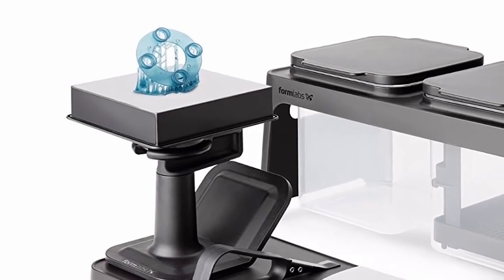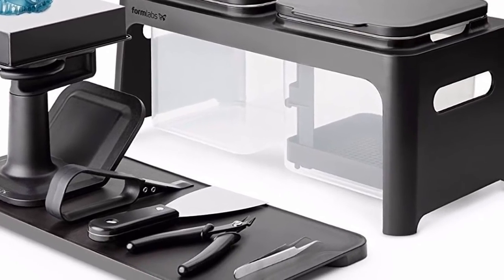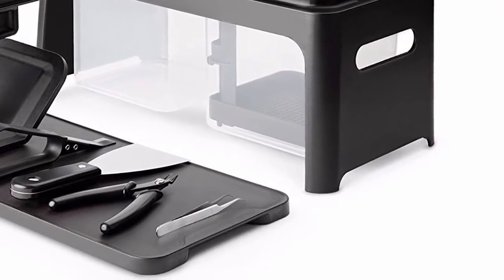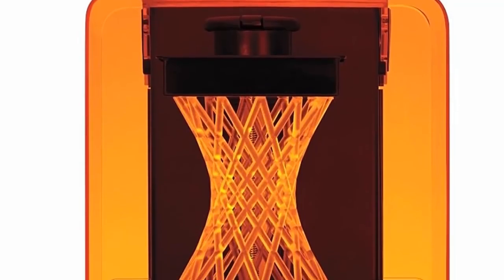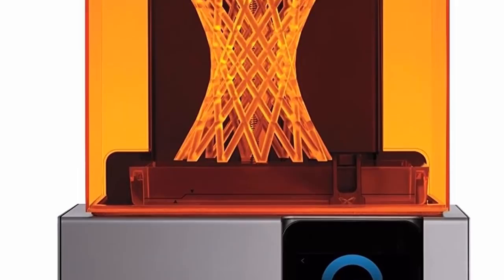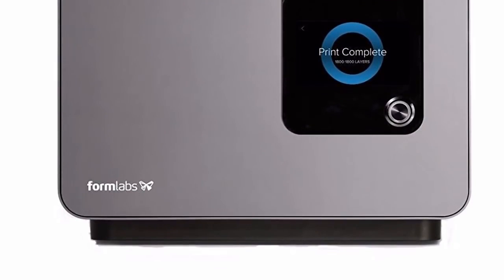Overall, although it might be a bit expensive, there's just no other alternative to Form 2. As a beginner, all you have to do to set up the Form 2 is unbox it, plug it in, install a print bed and resin, then connect it to USB or a network. It's all very simple.